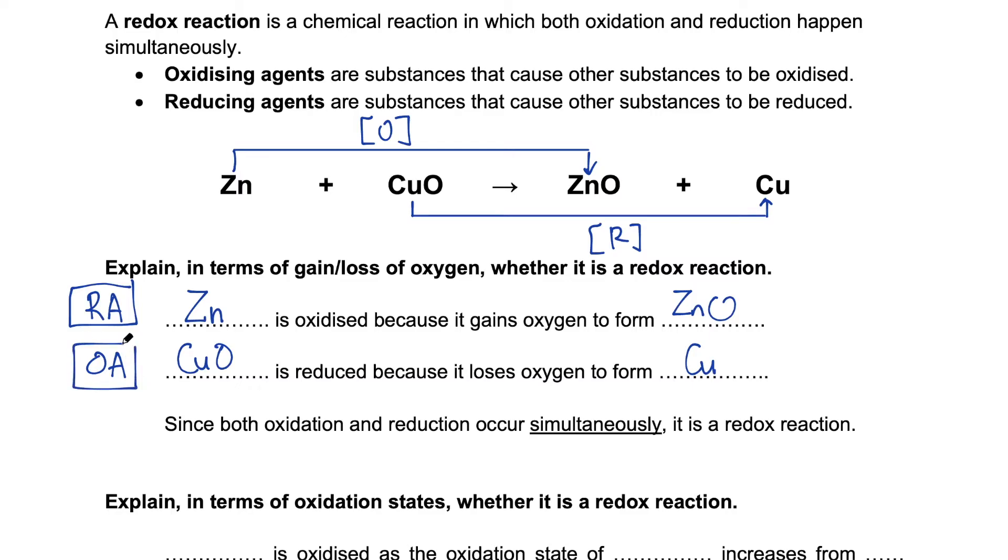The oxidizing agent is the substance that causes oxidation to take place. So if zinc is oxidized, copper 2 oxide must be the other one there that caused it. If copper 2 oxide is reduced, who could have caused it to be reduced? It has to be zinc. Because there are only two players in this equation.